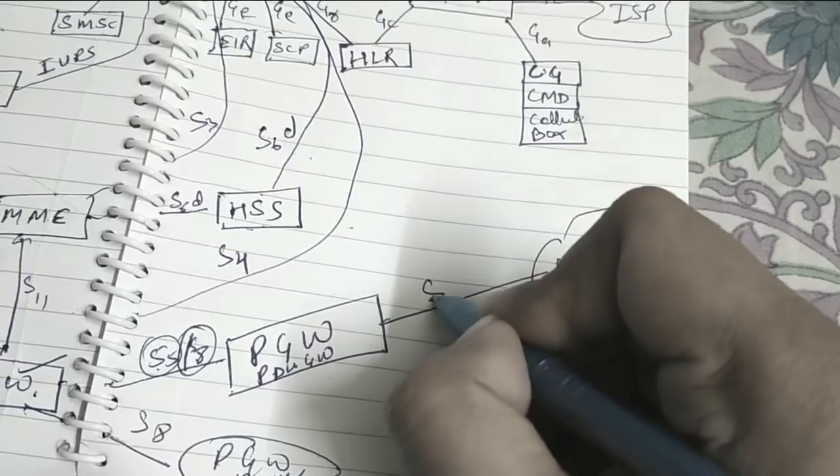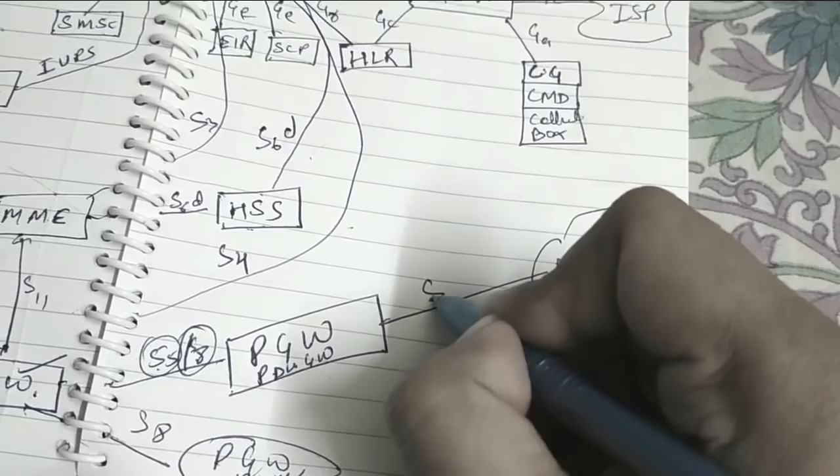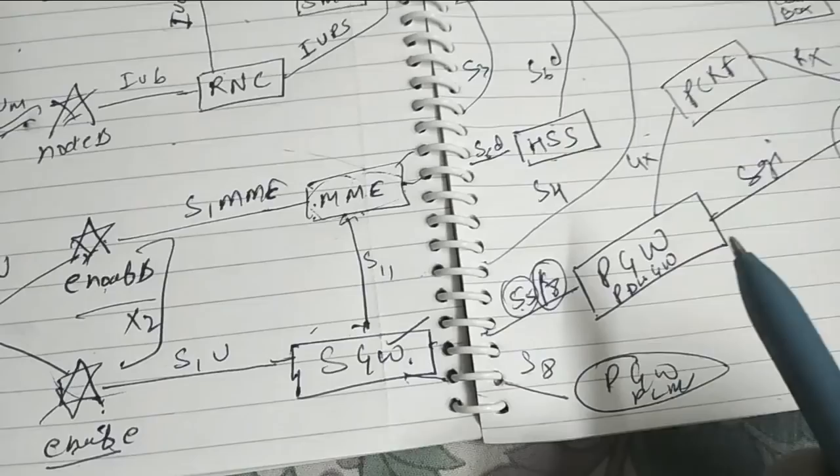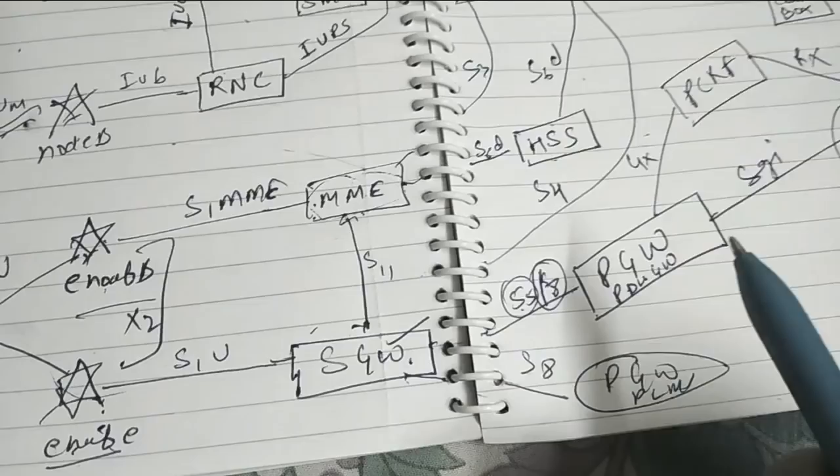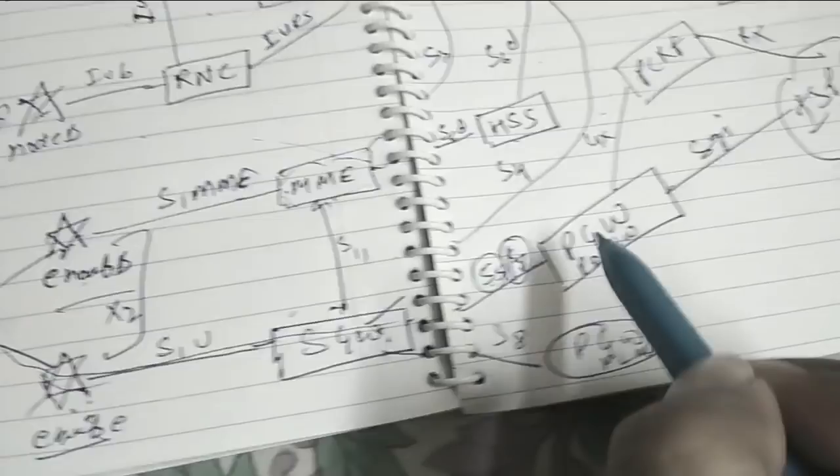This PGW will be connected to the PCRF also for the policy here. Regarding this also PCRF. Now this will be connected to GX and here it will be connected to the RX part. Now here also we have two different paths.